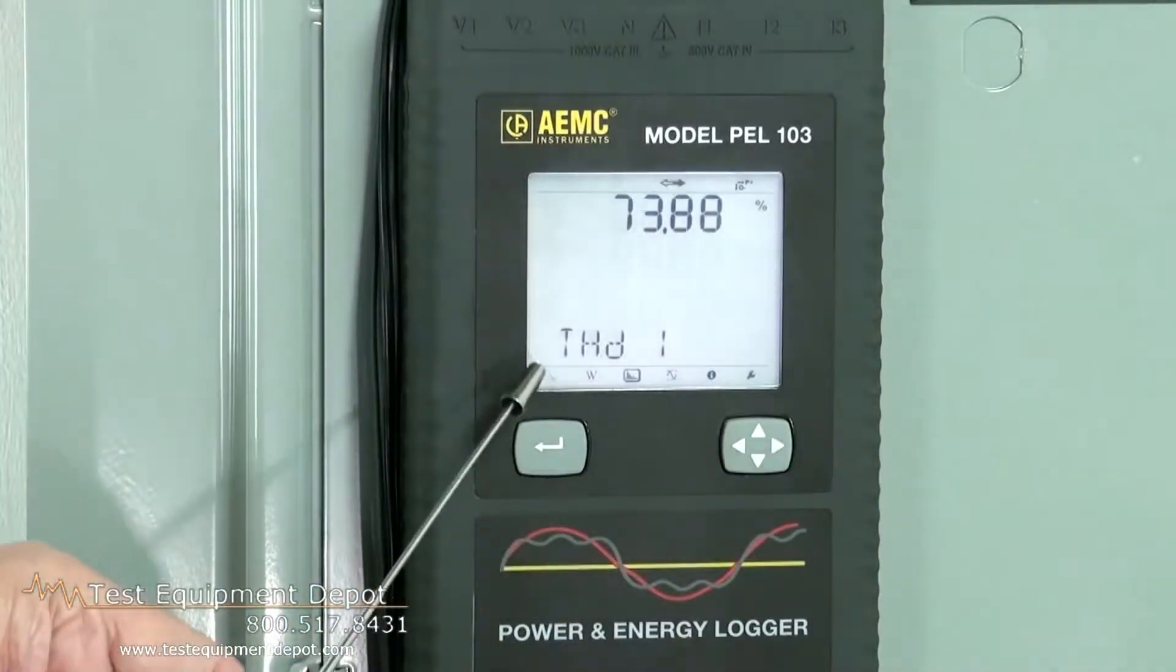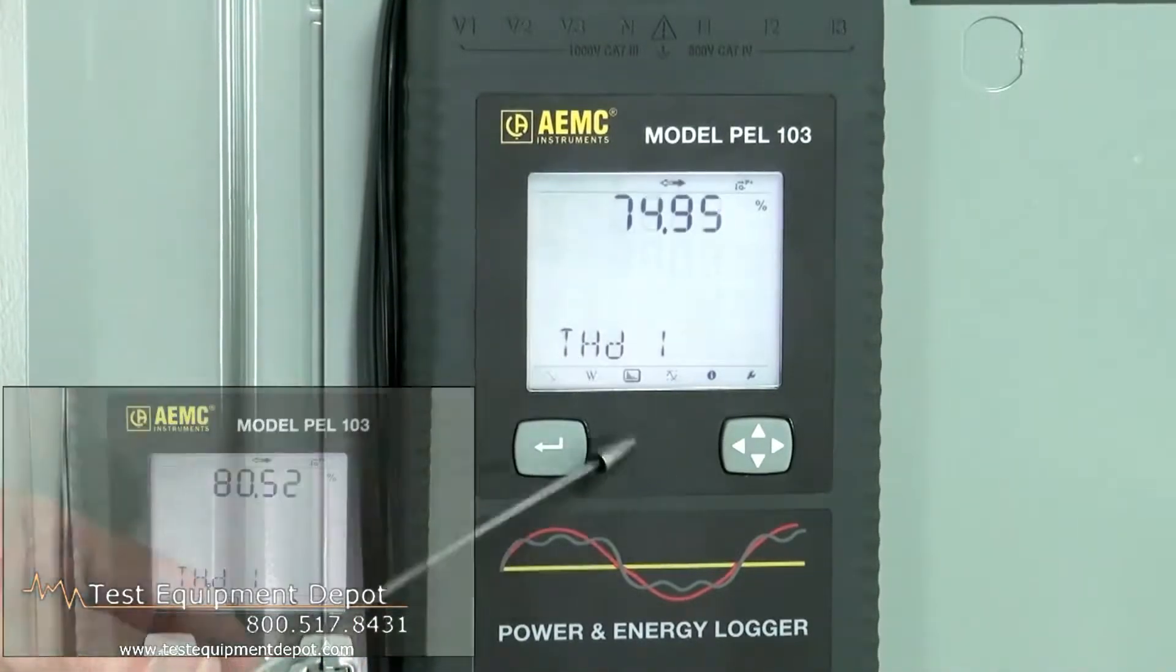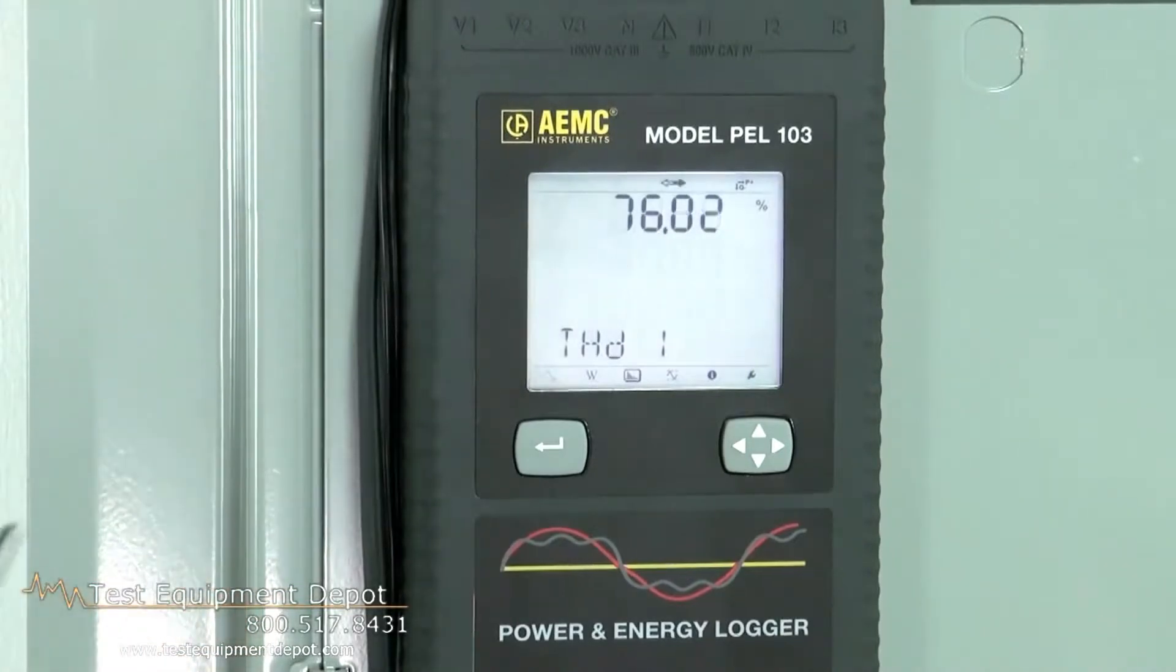We can then go over to harmonics. And this is the classic pipe organ symbol, which tells us what our total harmonic distortion is, and it tells us what the percent THD is.